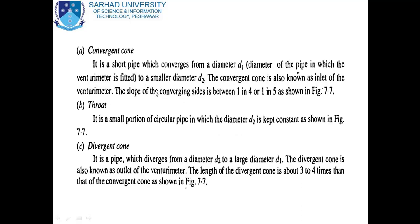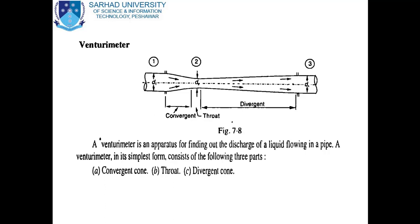The convergent cone is a short pipe which converges from a diameter d1 to a smaller diameter d2. The convergent cone is also known as the inlet of the Venturimeter. The slope of the converging sides is between 1 in 4 and 1 in 5, as shown in figure 7.7.